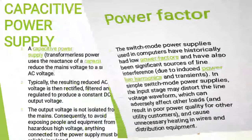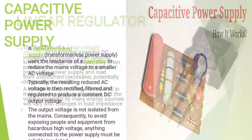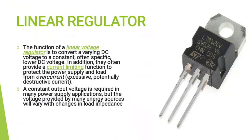A capacitive power supply uses the reactance of a capacitor to reduce the mains voltage to a smaller AC voltage. The function of a linear regulator is to convert varying DC voltage to a constant, often specific, lower DC voltage. In addition, linear regulators often provide a current limiting function to protect the power supply and load from excessive, potentially destructive current.